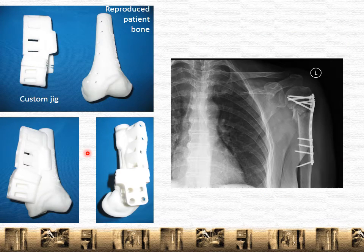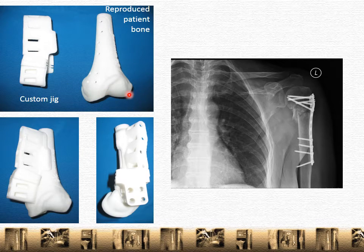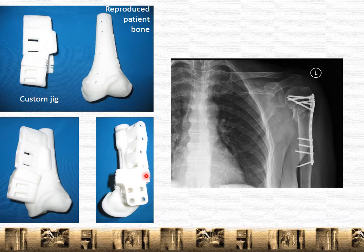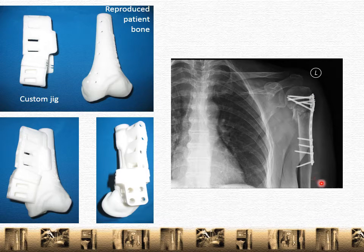The jig for a similar case is shown here. On the right, you have the patient's actual femur in a different case that has been printed in three dimensions. And then the cutting jig, because of this three-dimensional configuration, can only fit in one way. It even tells you where to put the screws. This would be the final product where the plate is put in place with all the screws secured.